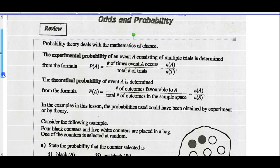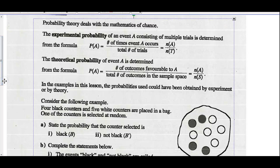Quick review from last lesson. Probability theory deals with the mathematics of chance. The experimental probability of an event A consisting of multiple trials is determined from the formula probability of A equals number of times event A occurs divided by total number of trials. The theoretical probability of event A is determined by the formula of the total number of outcomes favorable to A divided by total number of outcomes in the sample space.